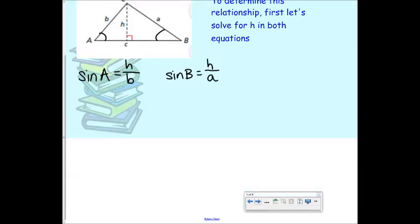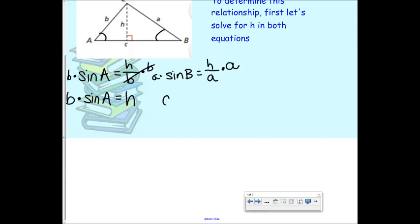We're going to figure out the law of sines, but to do that we need to isolate h so we can be talking about the same thing. To isolate h in the sine A equation, multiply both sides by b — the b's cancel and we get b times sine A equals h. For the sine B equation, multiply both sides by a, giving a times sine B equals h.